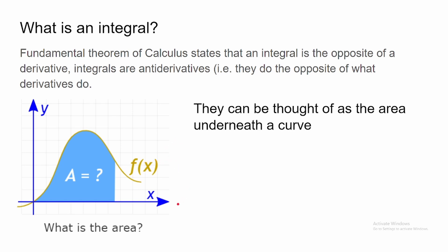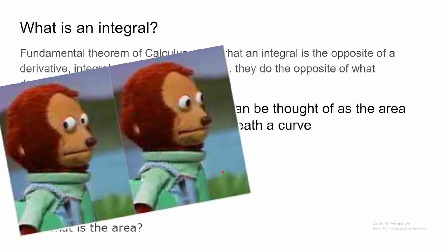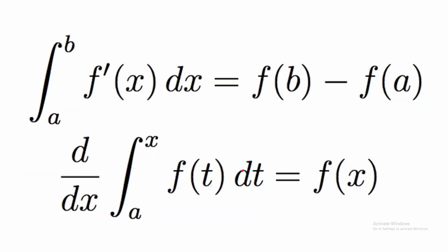Now that is a definite integral, in which the integral has two numbers that define the starting endpoints of the area underneath the curve. This is the fundamental theorem of Calculus: f'(x) just means the derivative of f, so the integral of f' from a to b is just the integral function f(x), and it's f(b) minus f(a). This is what the two bounds of integration tell you. Likewise, if you take the derivative of the integral, you get the original function — it's like the anti-derivative.